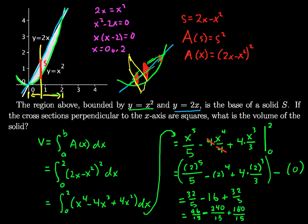Let's see, so 96 plus 160 gives me 256, minus 240 gives me 16 fifteenths. And I'll double check that before I post this video on the calculator, but that should be the final answer: volume of this solid.